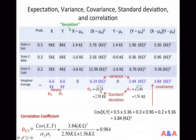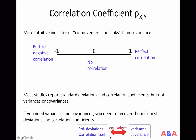Remember, standard deviation is just the square root of variance, and variance is the square of the standard deviation. So if you know the standard deviation, you can easily recover the variance. Similarly, if the correlation coefficient is reported, you can use the definition of correlation coefficient in the opposite way to recover the covariance. If you know the standard deviations and the correlation coefficient, the covariance is just the product of the correlation coefficient and each of the two standard deviations. Knowing standard deviations and correlation coefficients is equivalent to knowing variances and covariances.